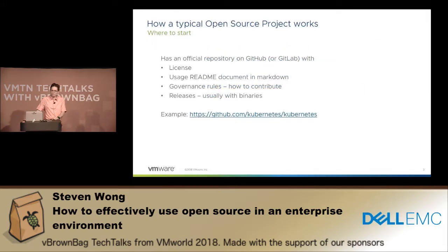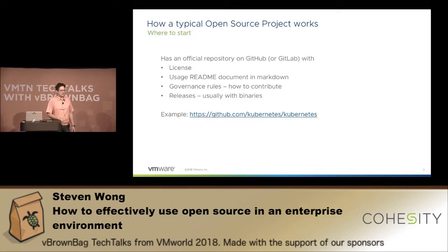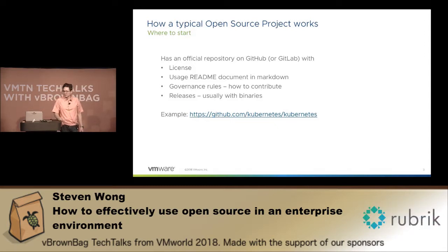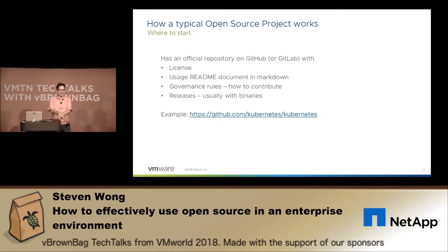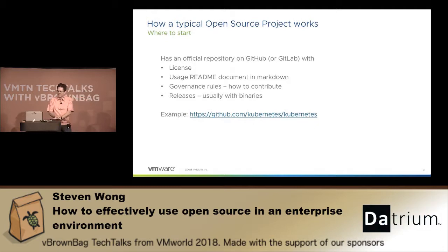The typical open source project works like this: it starts with a source code repository, usually on GitHub, though a handful are on GitLab instead. These are publicly accessible, internet-hosted source code repositories. Microsoft recently acquired GitHub, and there's been some talk of people preferring GitLab because of that, but I haven't honestly seen a lot of movement. You can typically discover a project's repo with a Google search, and what you'll find there is a license, a getting-started README document, some governance rules, and a list of releases. Sometimes releases come with compiled binaries ready to use; sometimes they don't and they expect you to do that final step yourself. An example is the Kubernetes project.